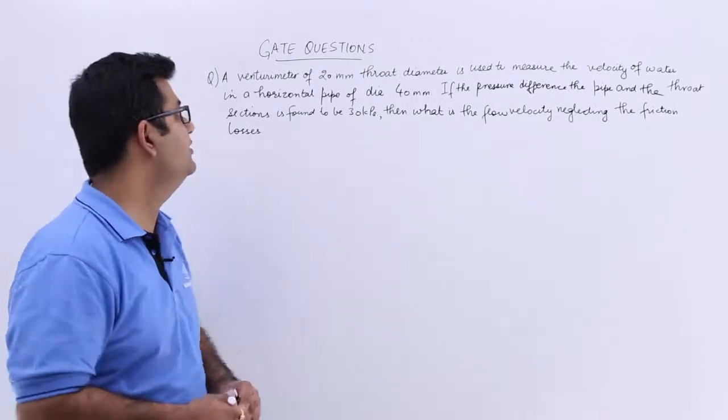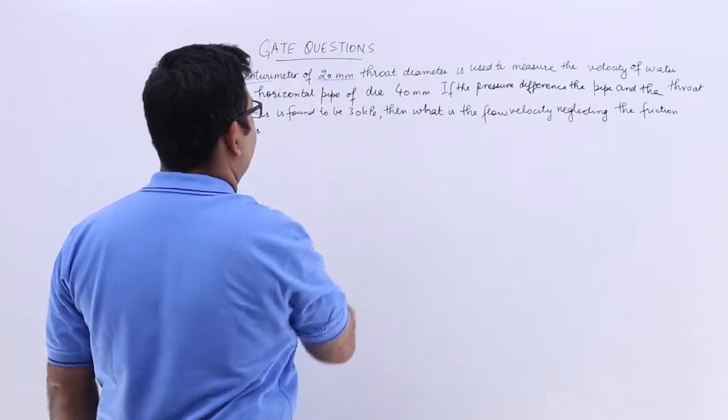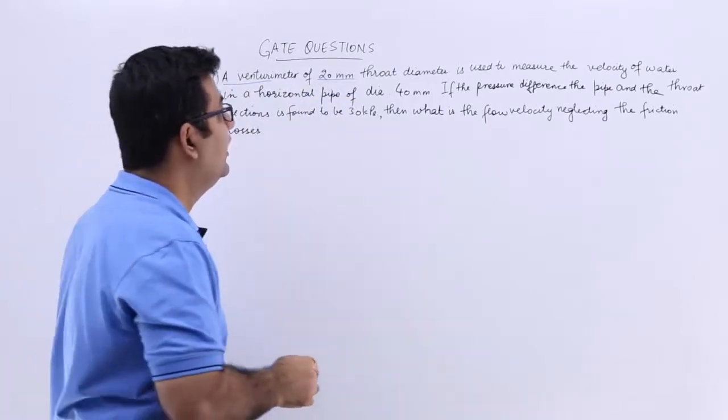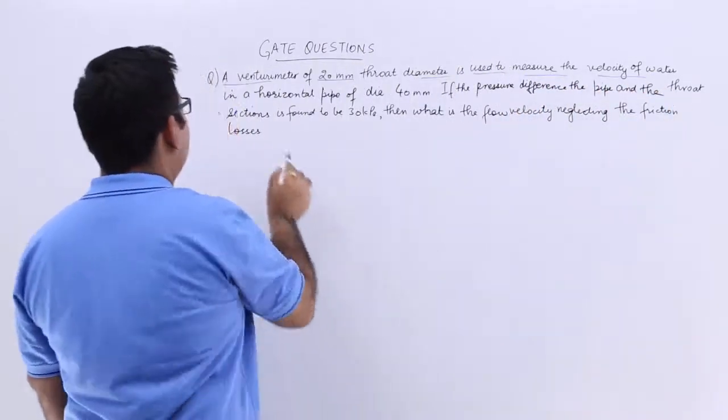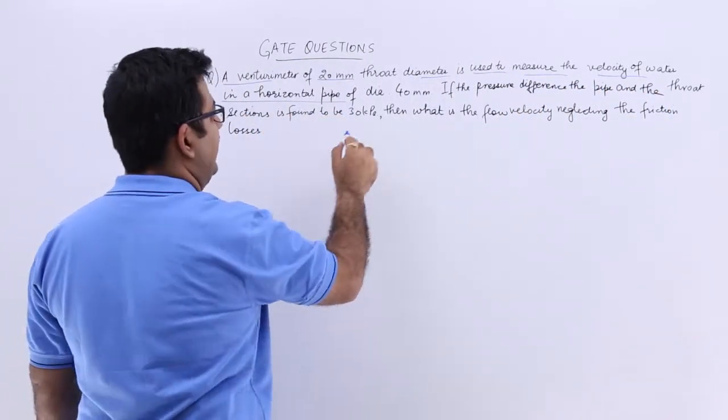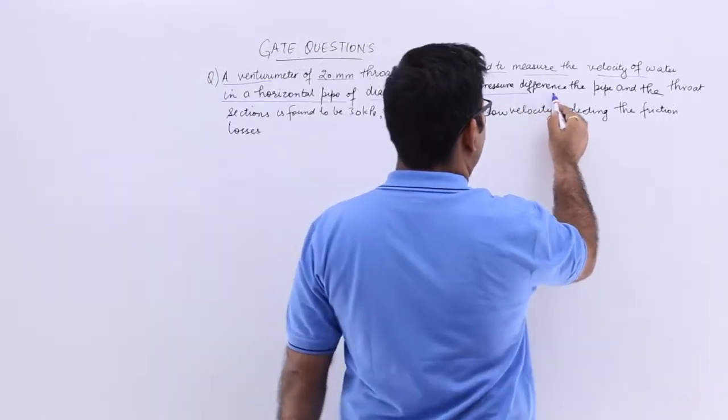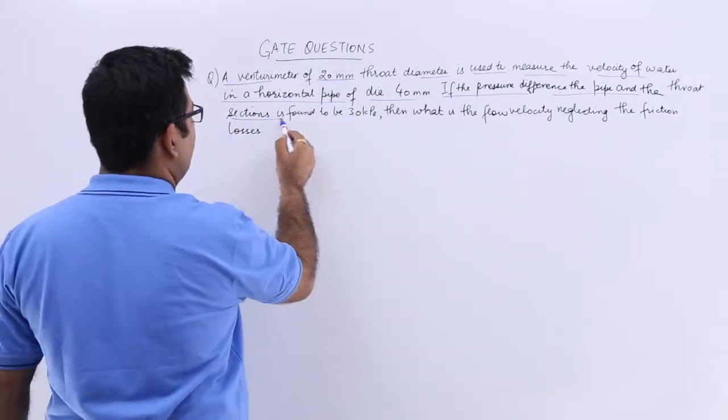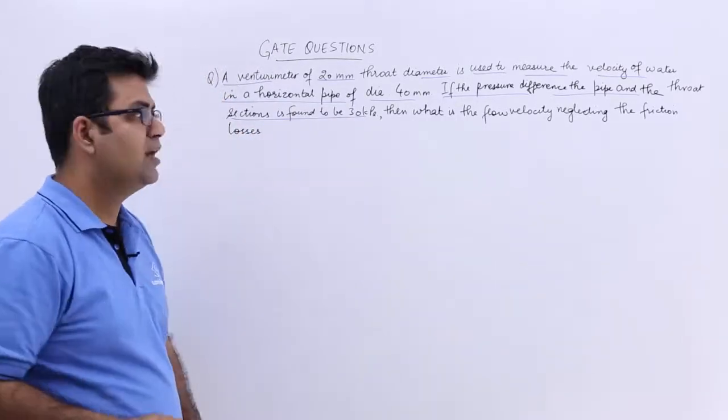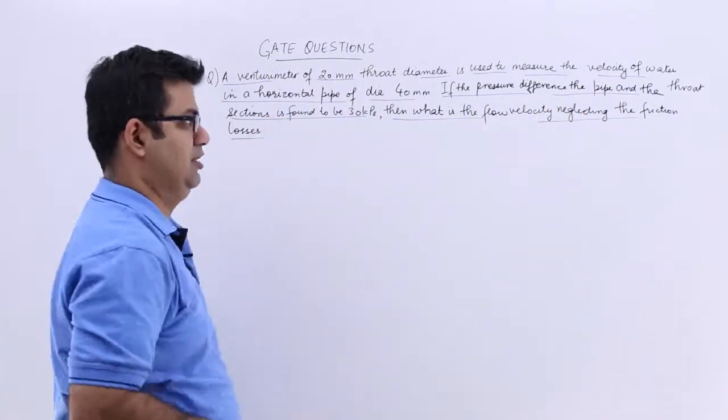Question number 5 says that we have a venturi meter. The venturi meter has a diameter of 24 mm at the throat and it is used to measure the velocity of water in a horizontal pipe of diameter 40 mm. If the pressure difference of the pipe and the throat sections is found to be 30 kilopascals, then what is the flow velocity if we neglect the frictional losses?